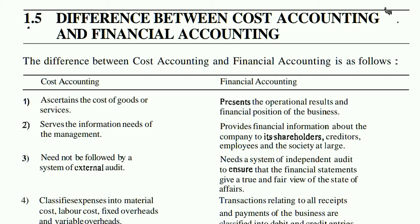The first point is ascertaining the cost of goods and services. In cost accounting, we try to ascertain the cost of goods or services. In financial accounting, we present the operational result and financial position of the business. So cost accounting focuses on determining costs, while financial accounting focuses on the company's overall operations and results.